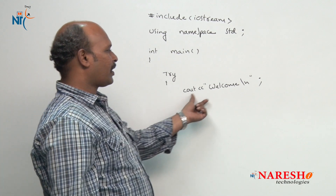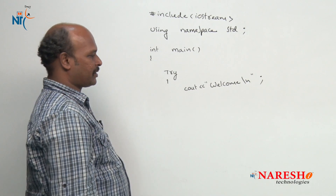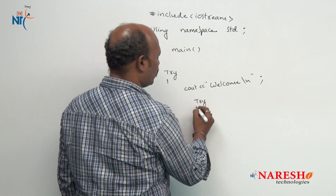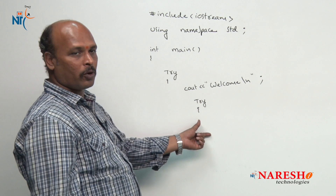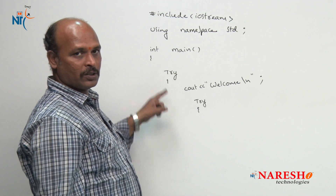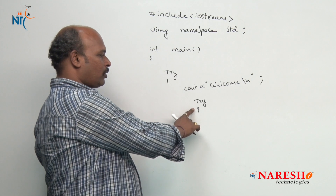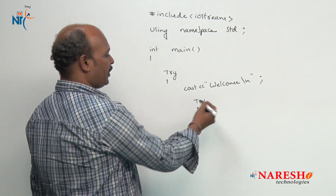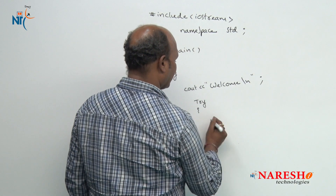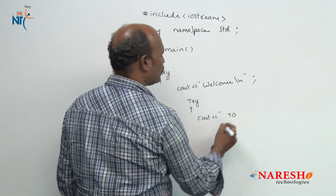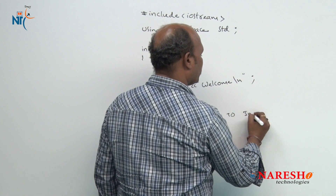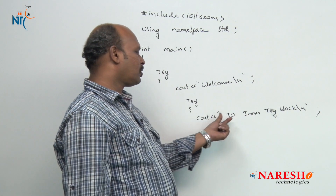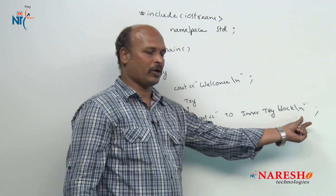Welcome is printed. Now watch what happens: suppose here I am going to write another try block. I am going to start another try block within this try block — that means one try block within another try block, which is called nested try blocks. Now here I am going to write cout, to inner try block.